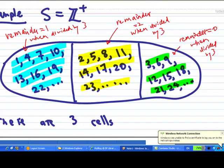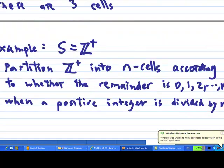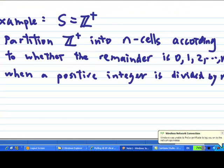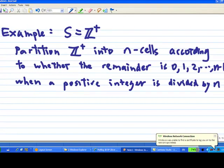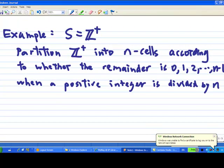In this case, there are 3 cells inside here. In general, for a set of positive integers, you can partition Z+ into n cells according to whether the remainder is 0, 1, 2, 3, all the way to n minus 1, when this positive integer is divided by n.